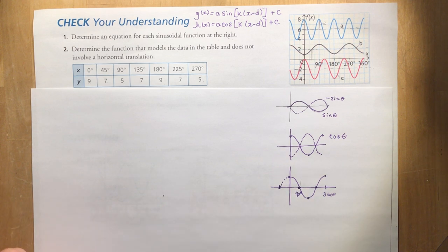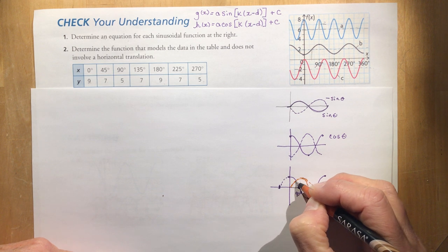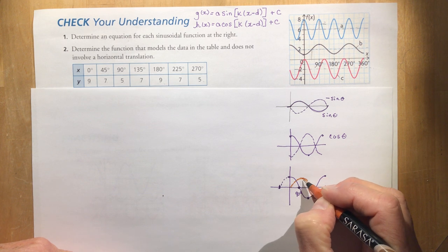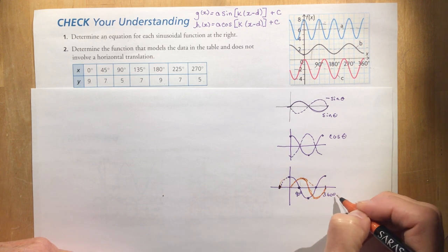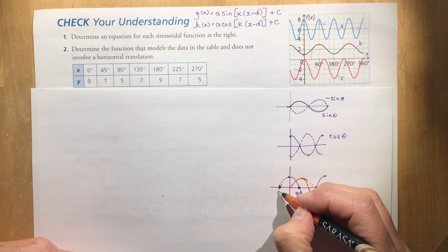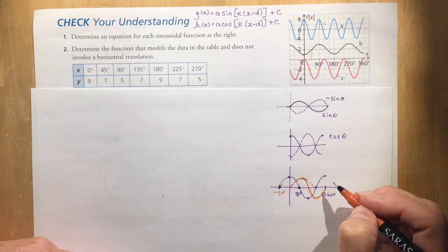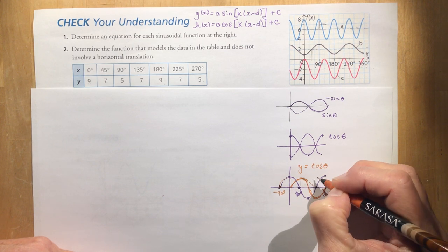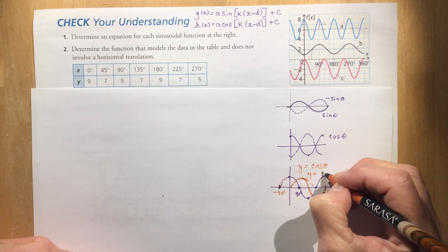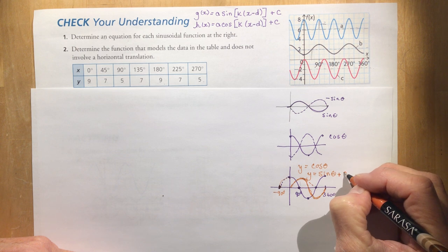Sine should start at the axis — so the cosine function is a sine function shifted to the left. If I wanted to express a cosine starting point as a sine function, I need to shift it. If the shift is negative 90 degrees (going left), then it becomes plus 90 degrees in the equation. So y = cos(θ) is the same thing as y = sin(θ + 90°).